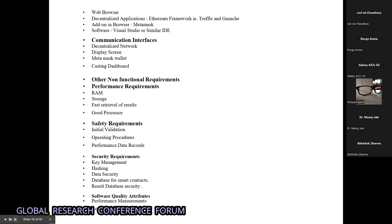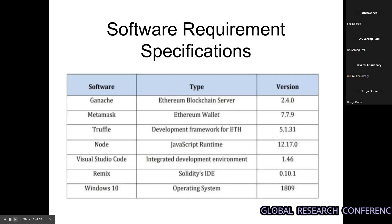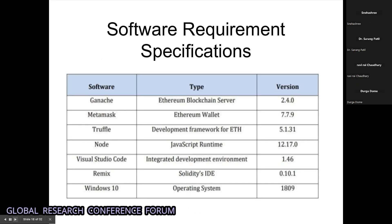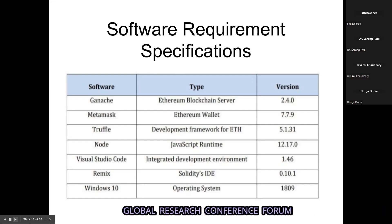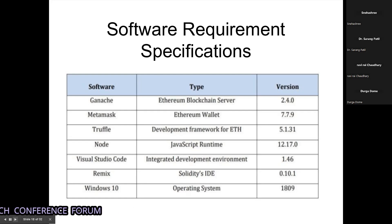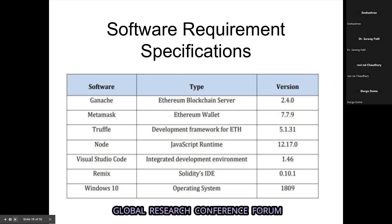These are our software requirements. We use Ganache to build an Ethereum server, MetaMask wallet to create tokenization through smart contracts, Node.js to create a website for running JavaScript, and Solidity to create a smart contract which will be communicated through MetaMask and tokenization.